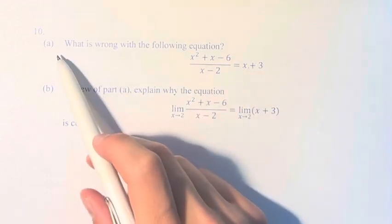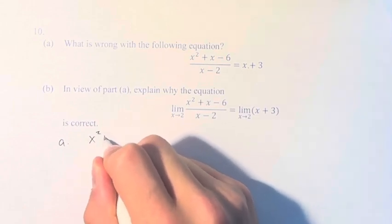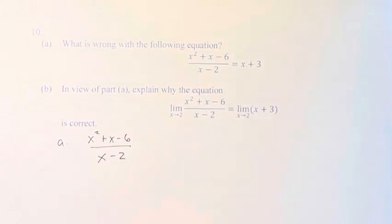To understand what is wrong with it, we first have to understand how they even get to this. So if we take x squared plus x minus 6 and we divide it by x minus 2,